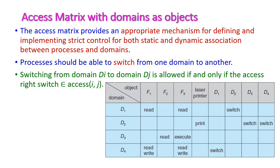Next, let's see the access matrix with domains as objects. Previously we had only objects, but now we include domains as objects in the access matrix. The access matrix provides an appropriate mechanism for defining and implementing strict control for both static and dynamic association between processes and domains.